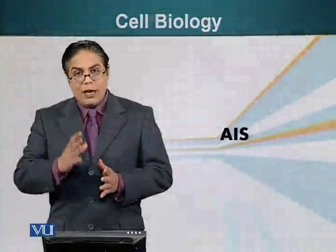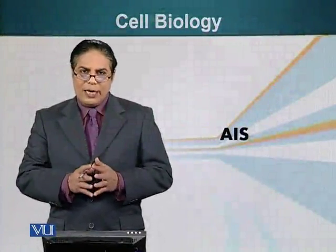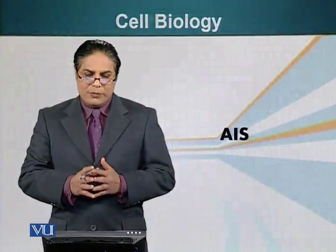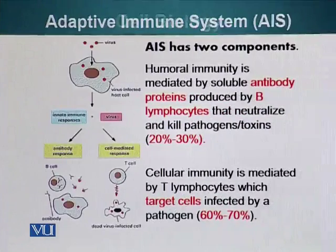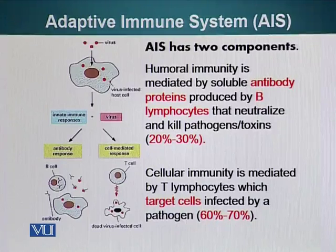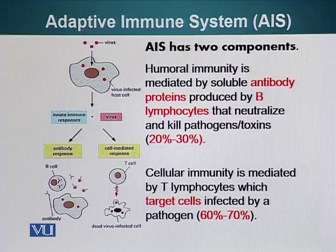We have talked about lymph nodes. Let's talk about the adaptive immune system now. The adaptive immune system has two components. Humoral immunity, which is mediated by soluble antibody proteins, which are produced by B cells or B lymphocytes that can kill and neutralize pathogens.